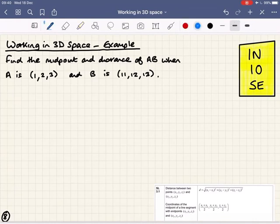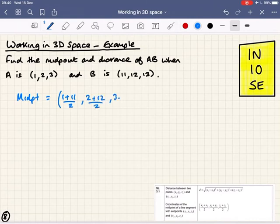Here's an example. You're given two coordinates a and b, 1, 2, 3 and 11, 12, 13. Find the midpoint and distance. Nice and straightforward. Midpoint is just going to be the average of each of the coordinates. 1 plus 11 over 2, 2 plus 12 over 2, and 3 plus 13 over 2, which will give us 6, 7, and 8 as the coordinates.